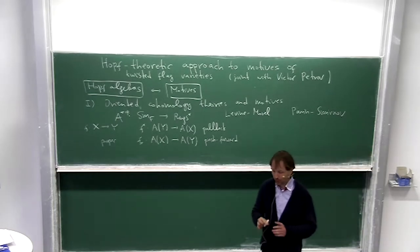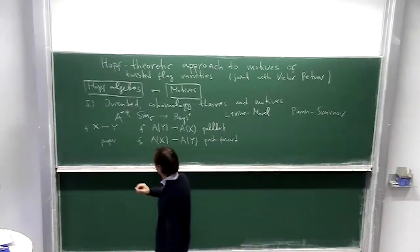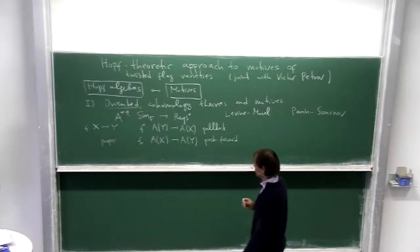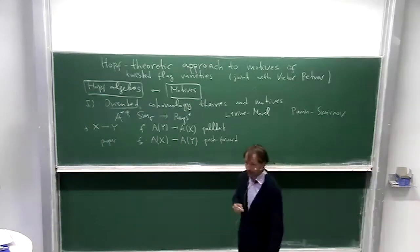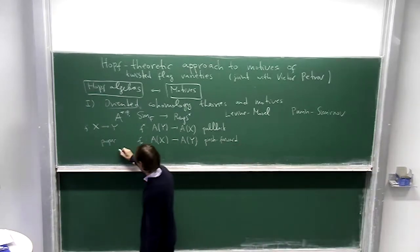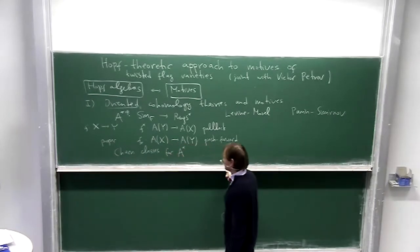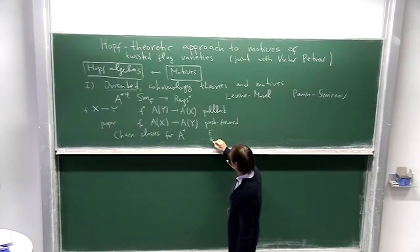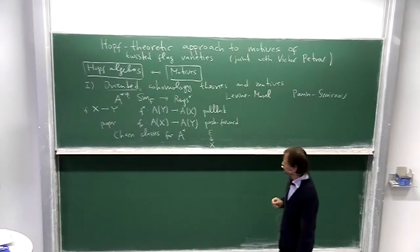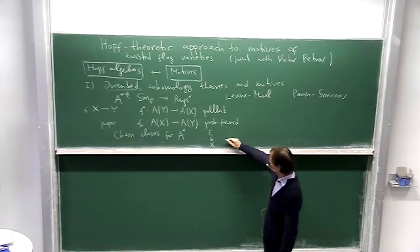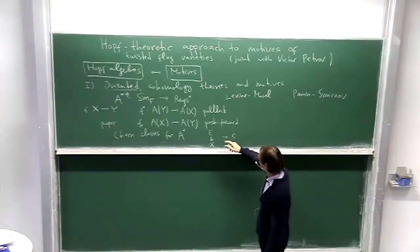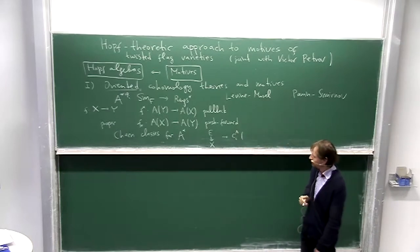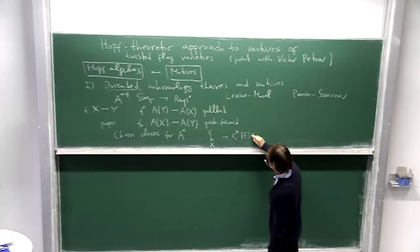Some other compatibilities. And what is the most important part for my talk: this should be additionally oriented. So oriented means there are Chern classes. Mainly if you have a vector bundle E over X, then you can associate to each vector bundle one of these.